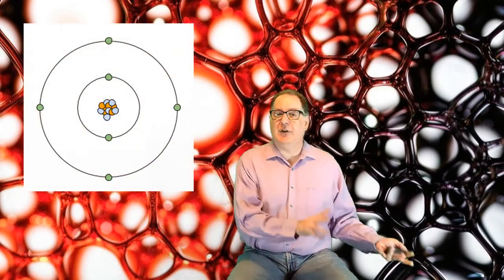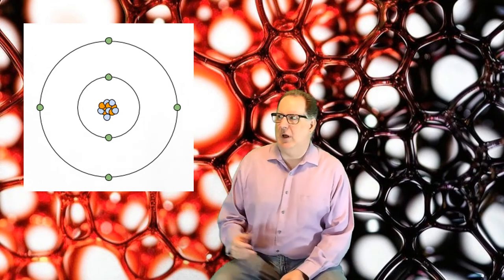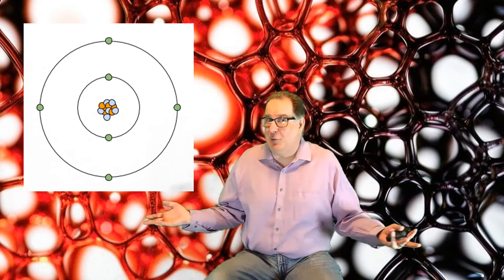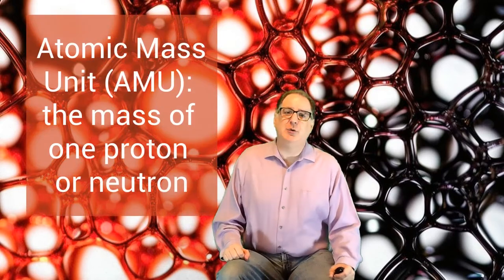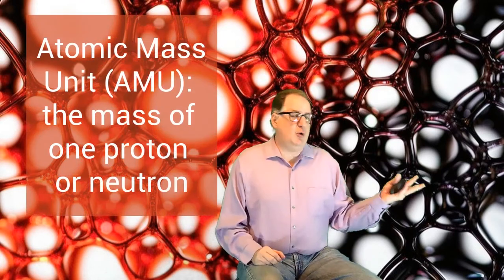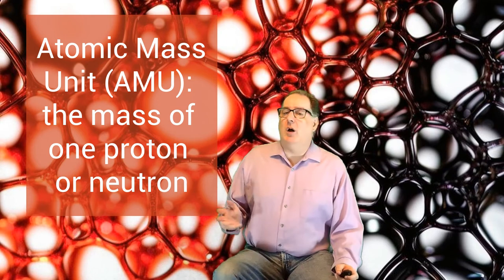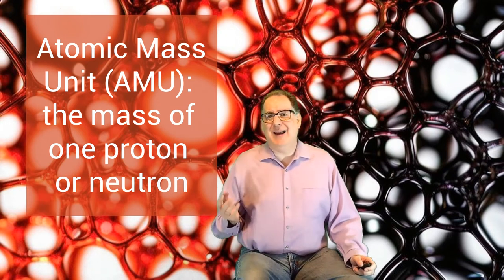So, a carbon atom with six protons and six neutrons has a mass of 12. Twelve what? Well, it sure isn't 12 kilograms. Well, it's 12 atomic mass units. One proton, or neutron, has a mass of one atomic mass unit, or AMU.